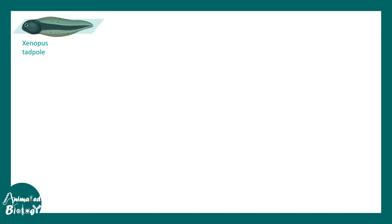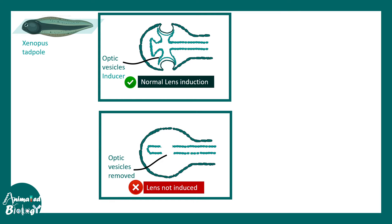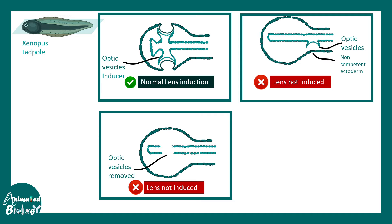One of the best examples comes from Xenopus eye development. Here is a Xenopus tadpole — when we cut a horizontal section, you can see two eye-like regions. The innermost part is the optic vesicle, which is the inducer of lens development. When the optic vesicle is present in the proper location, the lens is induced. When the optic vesicle is removed, the lens is never induced.